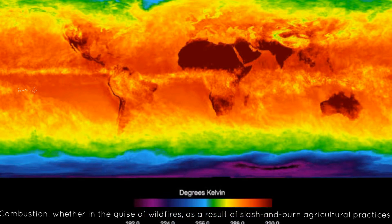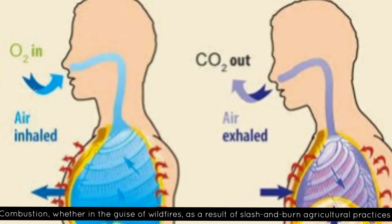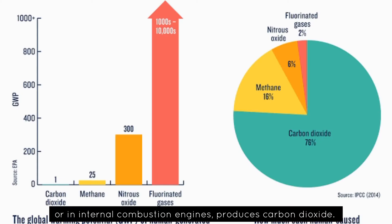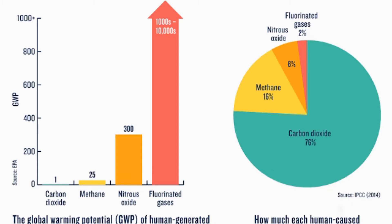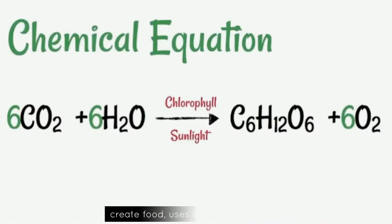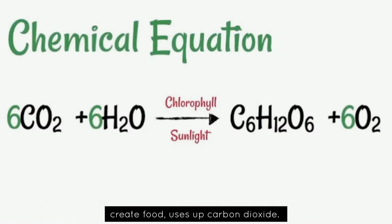Combustion, whether in the use of wildfires as a result of slash-and-burn agricultural practices, or in internal combustion engines, produces carbon dioxide. Photosynthesis, the biochemical process by which plants and some microbes create food, uses up carbon dioxide.